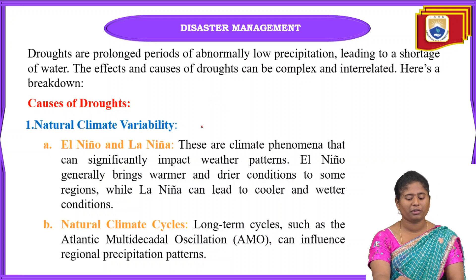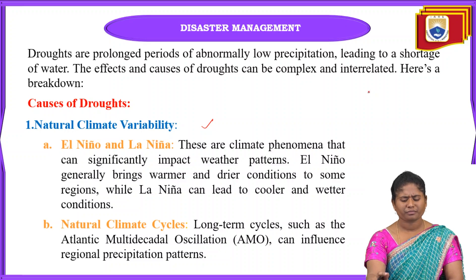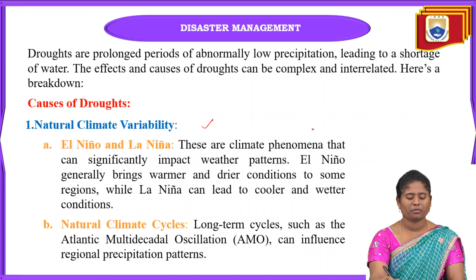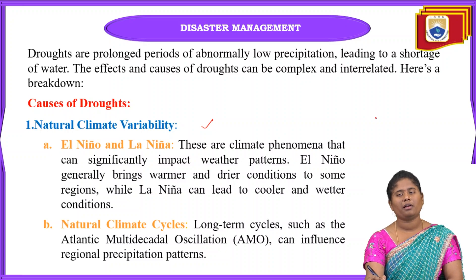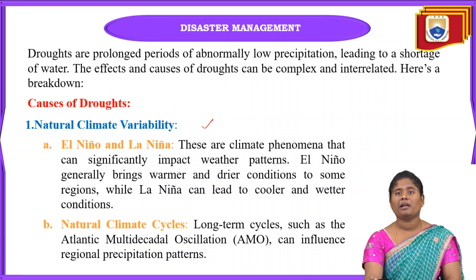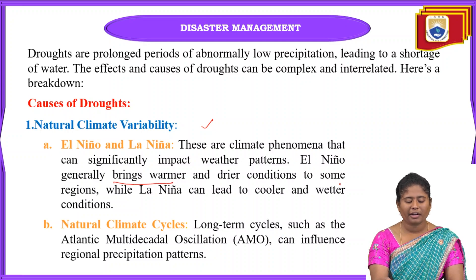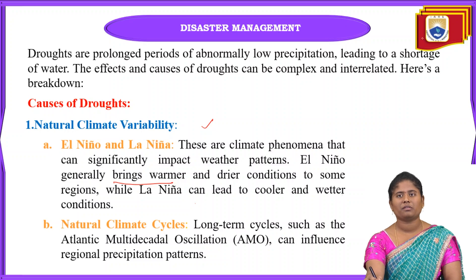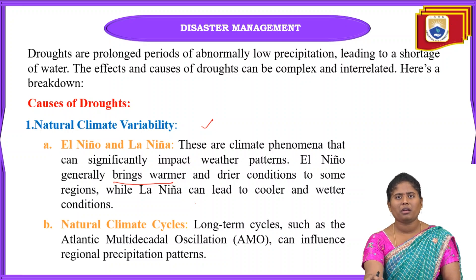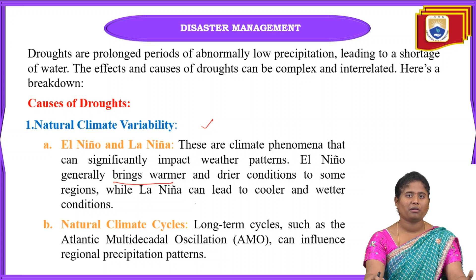The first main cause of droughts is natural climate variability. In this, we have two types: El Niño and La Niña. El Niño and La Niña are climatic phenomena that significantly impact weather conditions. El Niño brings warmer and drier conditions to some regions, while La Niña brings cooler and wetter conditions. Because of these phenomena, we can easily get droughts.